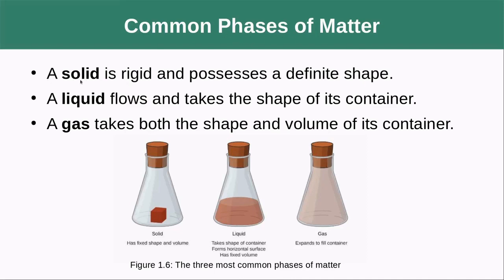It's best to jump into what the different phases are so you can see exactly what a phase is. A solid is a rigid phase of matter that possesses a definite shape. If you have a solid, it does not expand at all — it has a definite shape. For instance, this cube here is not going to take the shape of its container; it's just going to stay a cube. A liquid flows and takes the shape of its container.